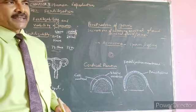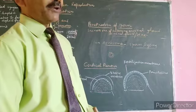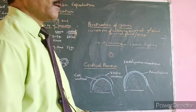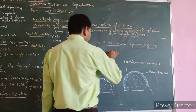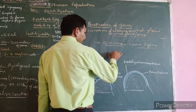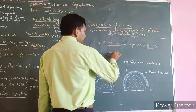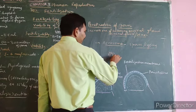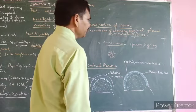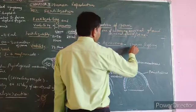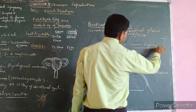corona radiata, zona pellucida, and hyaluronic acid present in space between follicular cells. These are dissolved by sperm lysins.